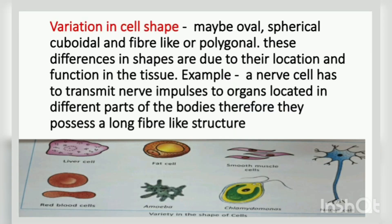On the basis of cell shape, cells can differ in different living organisms as well as within the same living organism. For example, in the human body, cells can be oval, spherical, cuboidal, fiber-like, or polygonal. These shapes differ depending on where the cells are located in the body and what function they are performing in the tissue.